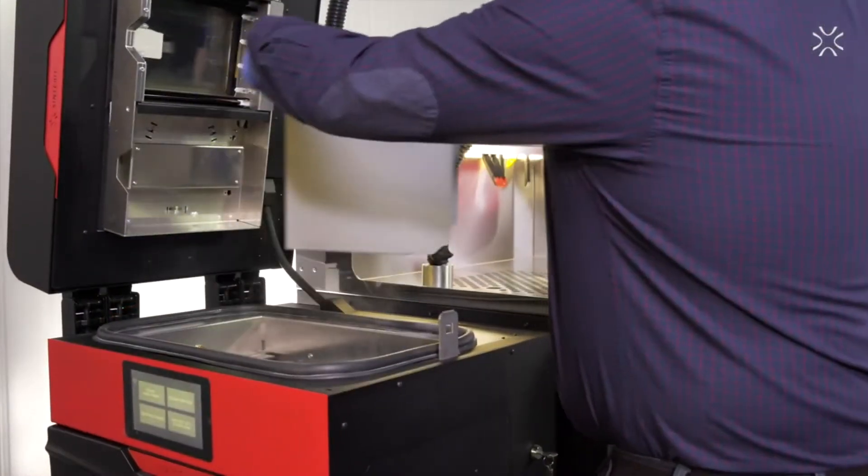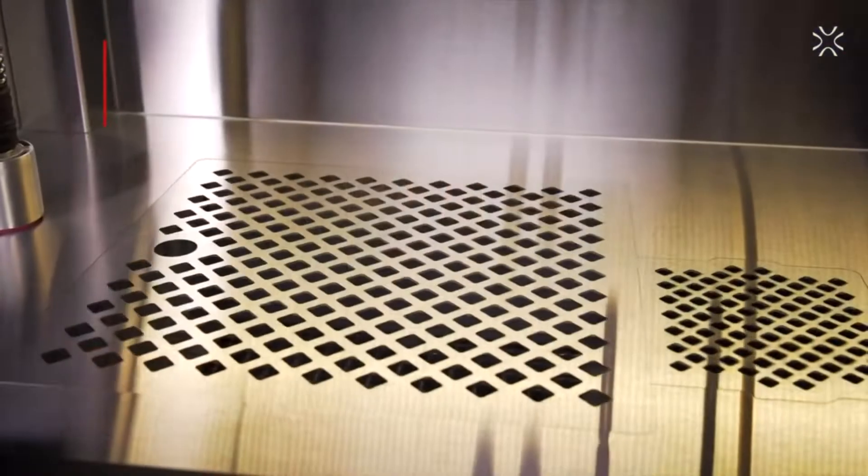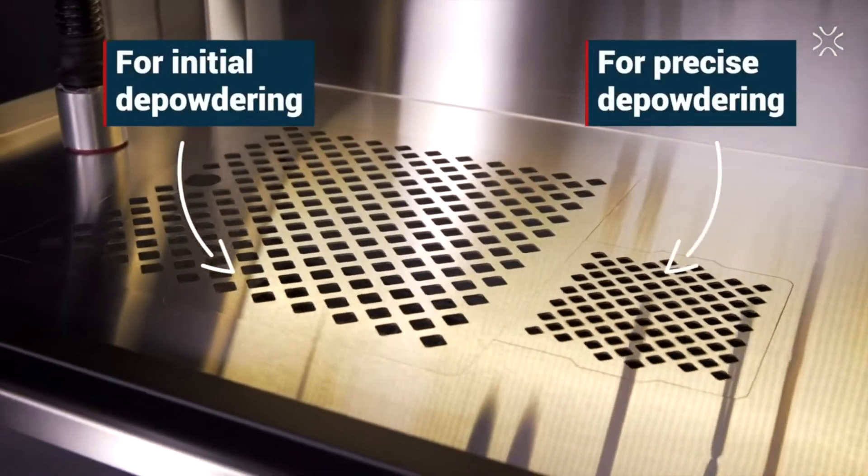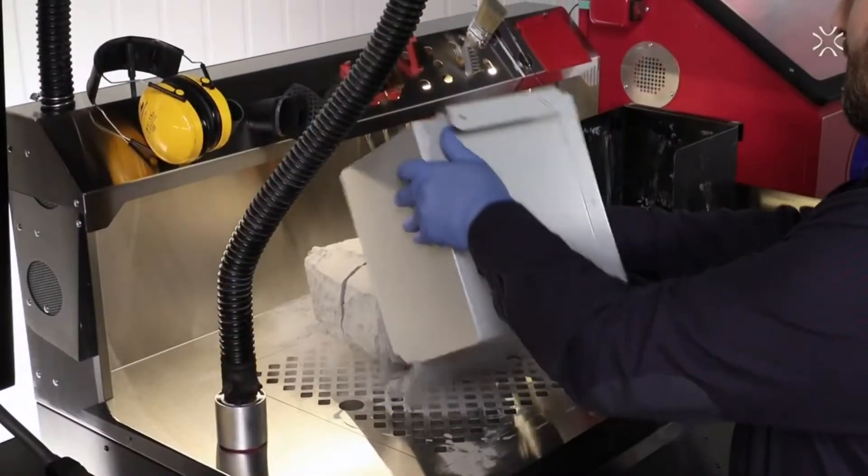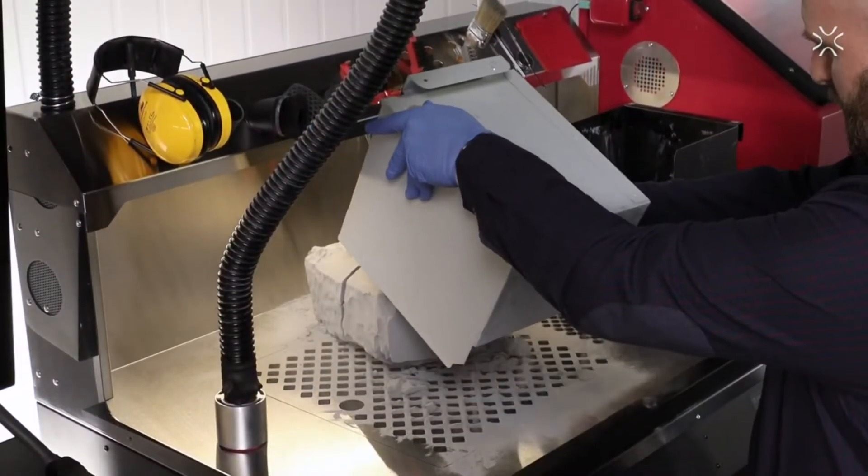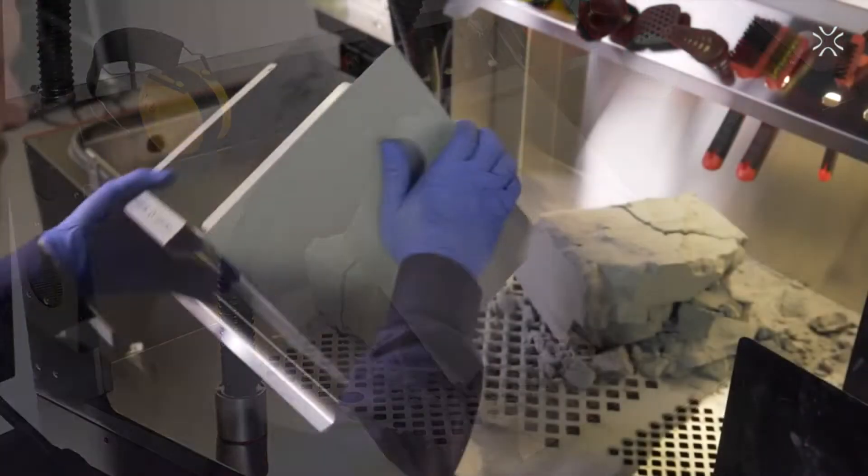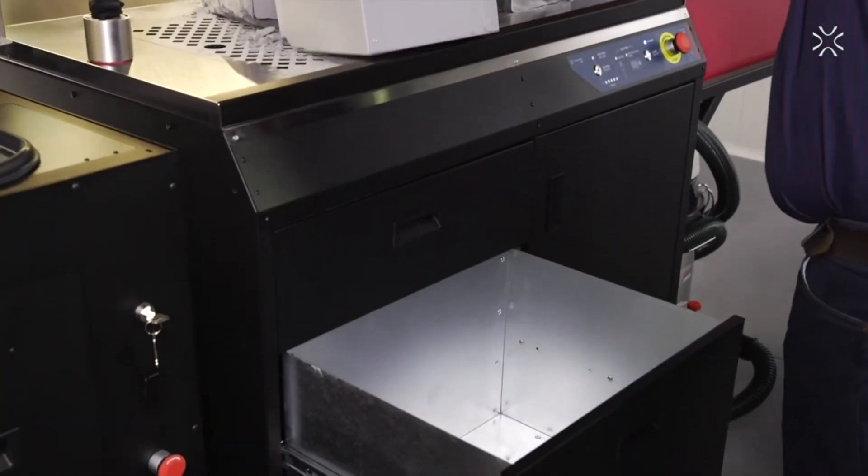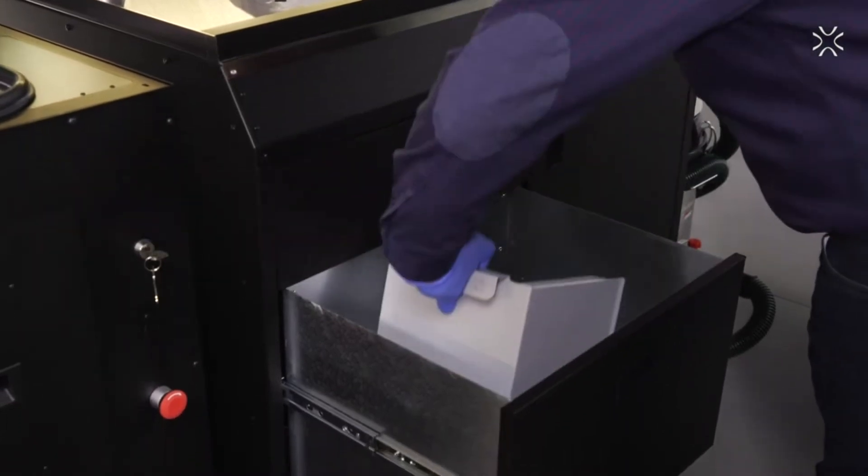You can do all depowdering processes on the PHS worktop. You can see two grids: a larger and a smaller one. Start cleaning the print on the larger one where initial depowdering takes place and finish on the smaller one. Remember all the tools that you need are always at hand.